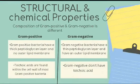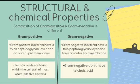Now we will differentiate gram-positive and gram-negative bacteria on the basis of cell wall. Gram-positive bacteria have a thick peptidoglycan layer and no outer lipid membrane, hence the cell wall of gram-positive bacteria is much thicker than that of gram-negative bacteria. Teichoic acid is found within the cell wall of most gram-positive bacteria, whereas gram-negative bacteria do not have teichoic acid.